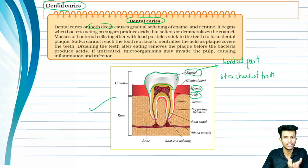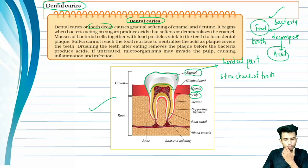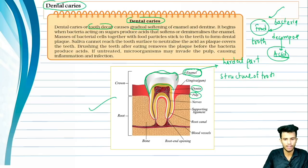When we eat at night but don't brush, food remains on the teeth. Bacteria come and decompose this food, and when bacteria act on the sugars in the food, they produce acid. This acid gradually softens and degrades the enamel and dentine, causing them to break down. Dental caries causes gradual softening of enamel and dentine — it begins when bacteria acting on sugars produce acid.